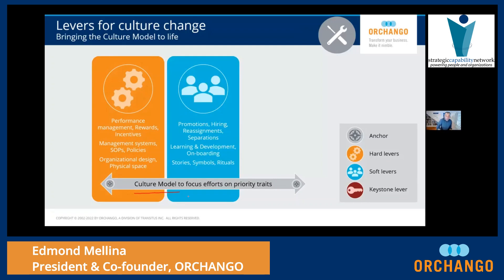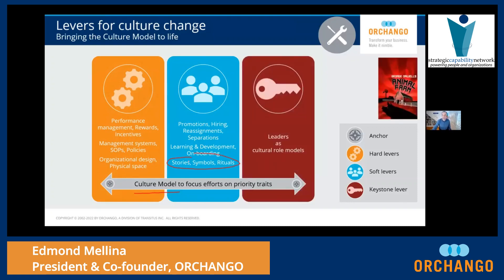The second set of levers to activate are soft levers, and one that is very important is stories, symbols, and rituals. But there is one lever — a soft lever — that sits outside the blue box. It's a little bit like Animal Farm: all the animals are equal, but some animals are more equal than others. The same thing applies here. There is one lever that is absolutely critical to activate, and that is leadership. You need to really find ways to bring the leaders on board genuinely — which is where the emotional case is very important — and then work with them and support them so they can be cultural models.